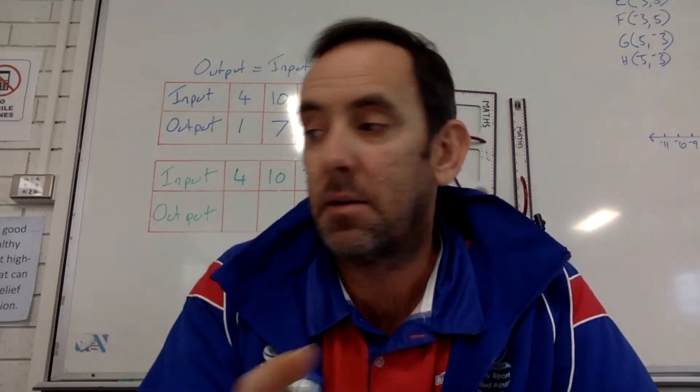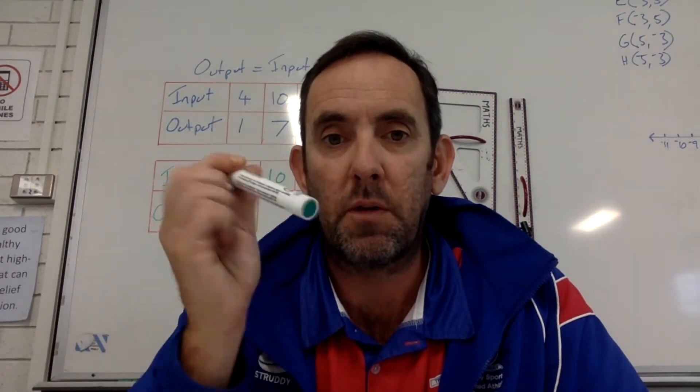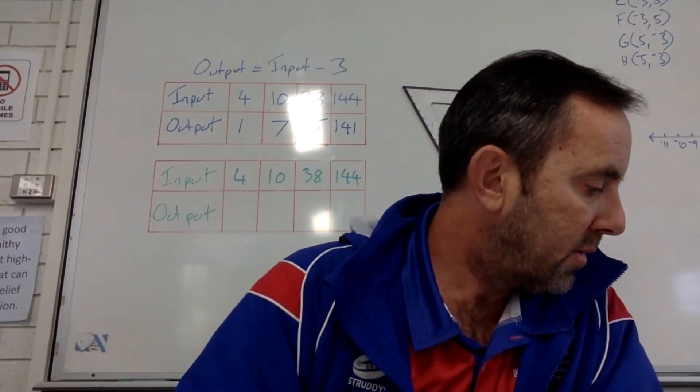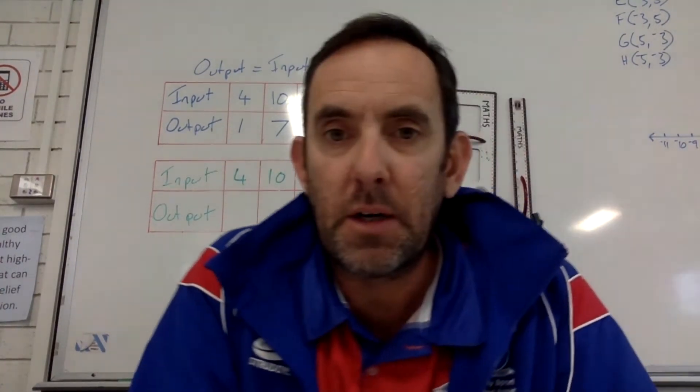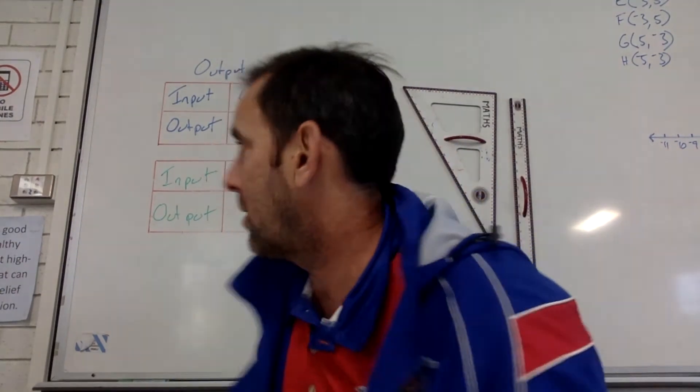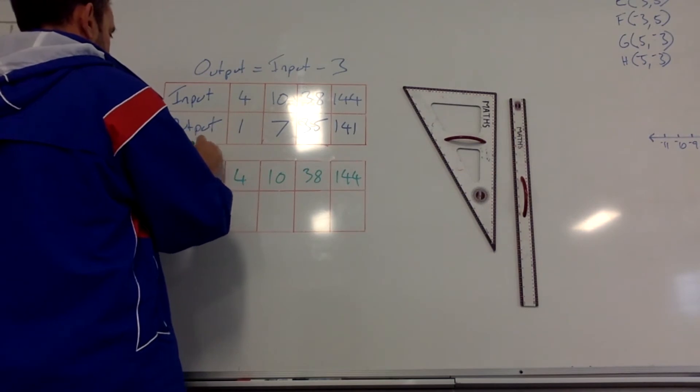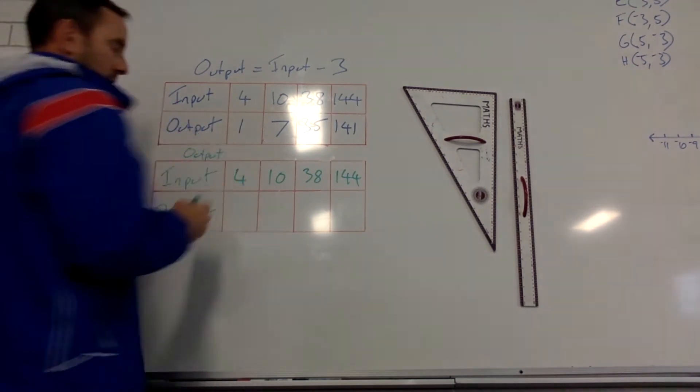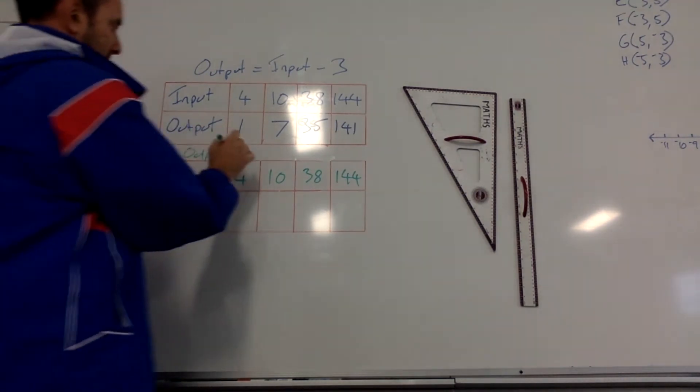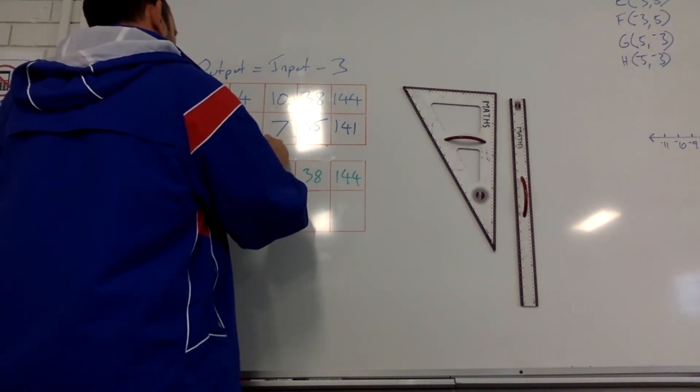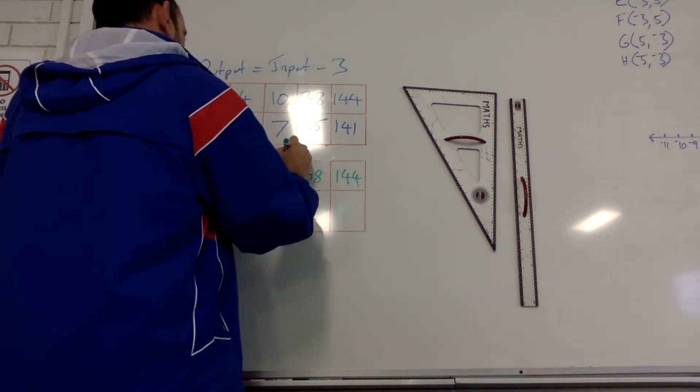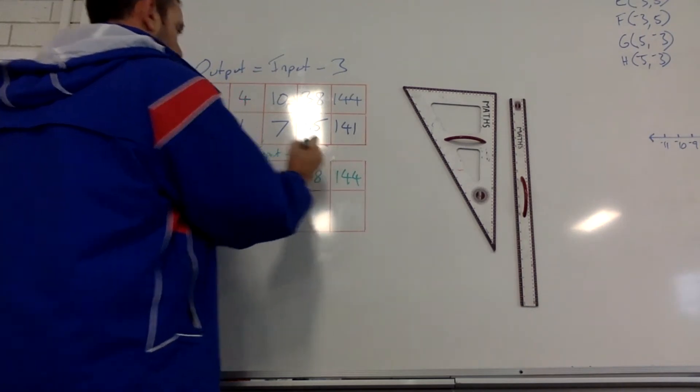Now the second rule, which I'm doing in green this time, says divide each input number by 2. So, my second rule is going to be output, notice the green matches the green. So, output equals input divided by 2.